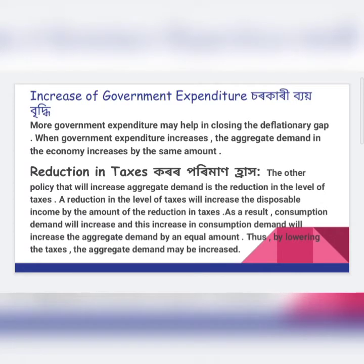There are two fiscal policy measures used to correct deficient demand of an economy. The first is increase of government expenditure, and the second is reduction in taxes.